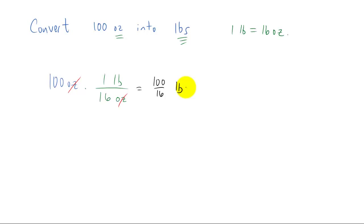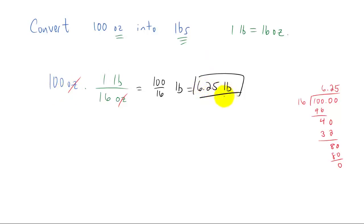Well, that's not a very useful number as far as pounds go. So what we want to do is actually do the division here. And if you do the division, you can check my work on the side over here, you get 6.25 pounds. So we learned that 100 ounces is 6.25 pounds.